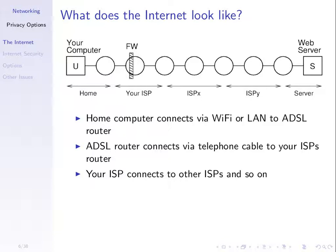Sometimes an internet service provider will use a firewall, which is used to control traffic going through it. The firewall may be used by your ISP or another ISP to control what you can access outside of your home network, and to some extent what can come in — provided by the ISP, not your home firewall. Sometimes that firewall may be configured to block you from accessing some websites. We've used IP tables, for example, to block access to different services.